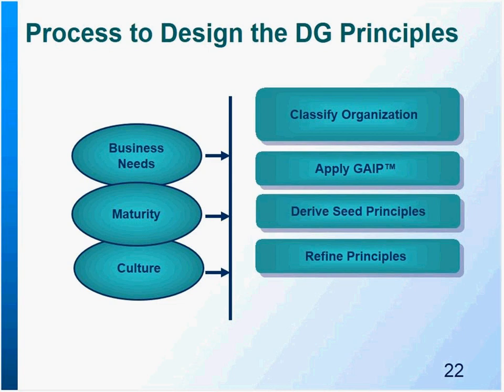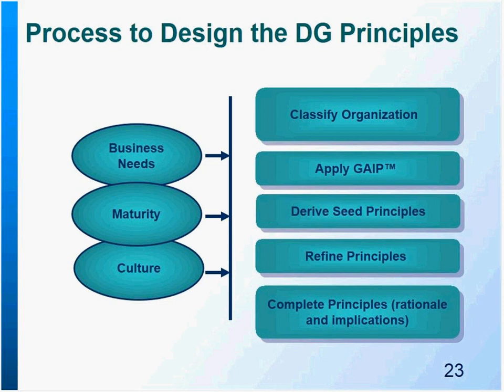Then you complete your principles by adding the rationale and the implications. It's really important to think hard about why you're doing this particular principle, what it means, and what are the implications. Then go back to those three bubbles: cultural impacts, maturity level, and business needs. If you see that your marketplace demands profound operational integrity and flexibility, and you don't have a principle supporting that, go back to the drawing board.